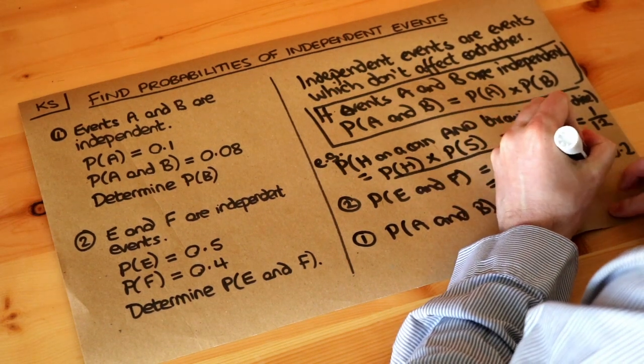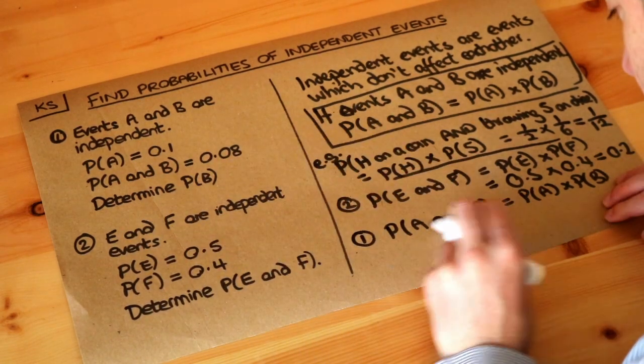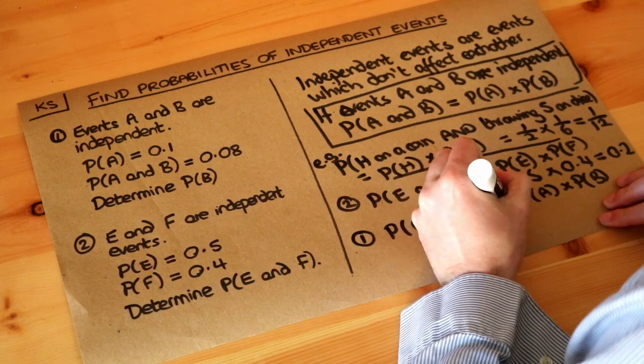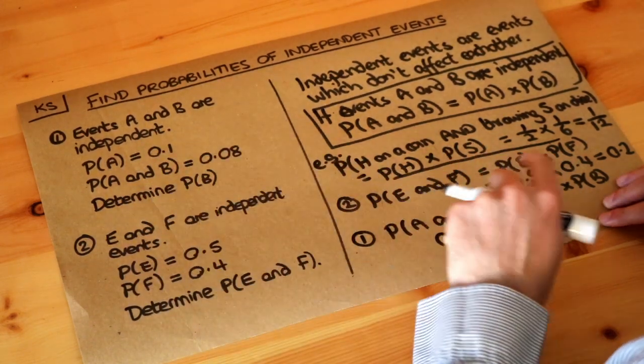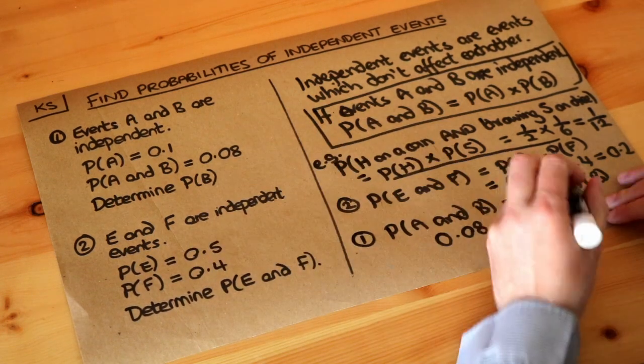Now let's just fill in what we know. We know the probability of A and B, that's 0.08, so I can fill that in there: 0.08. The probability of A we're told is 0.1, but we don't know the probability of B. That's what we're trying to work out.